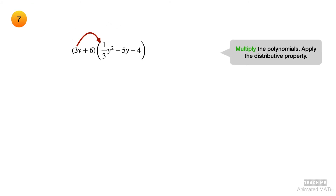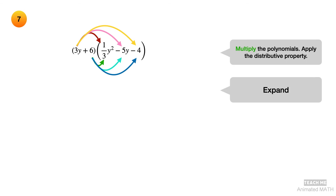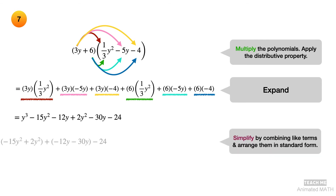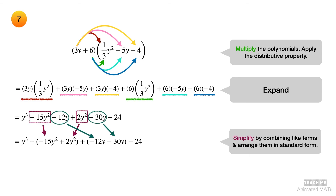Apply the distributive property when you multiply the polynomials. Expand the product — each colored arrow is matched with an underline of the same color. Simplify the polynomial product by combining like terms and arrange in standard form. The final answer is y cubed minus 13y squared minus 42y minus 24.